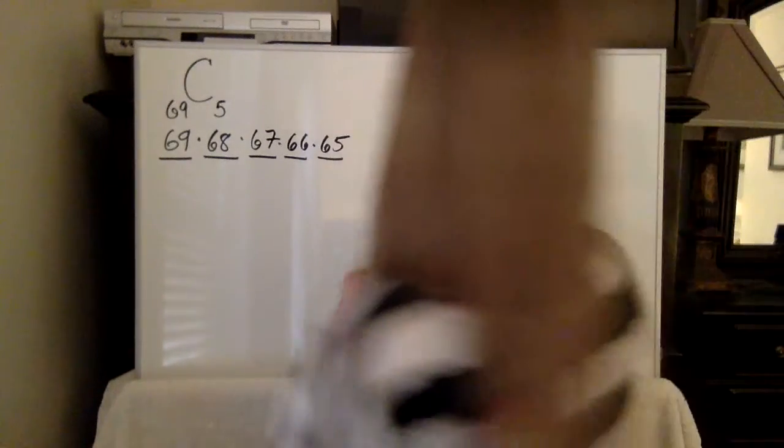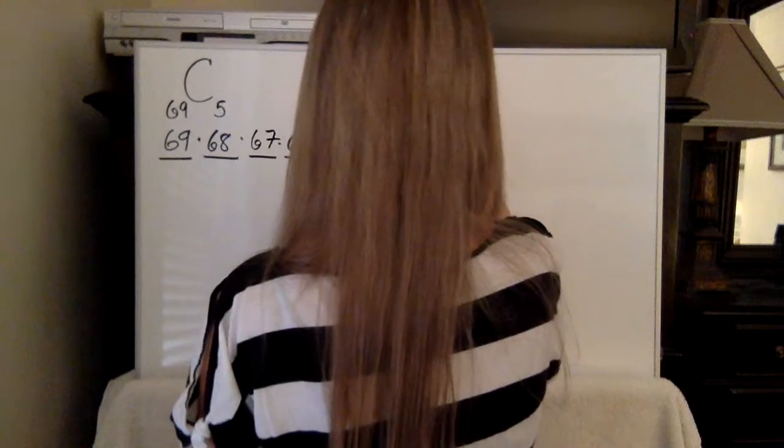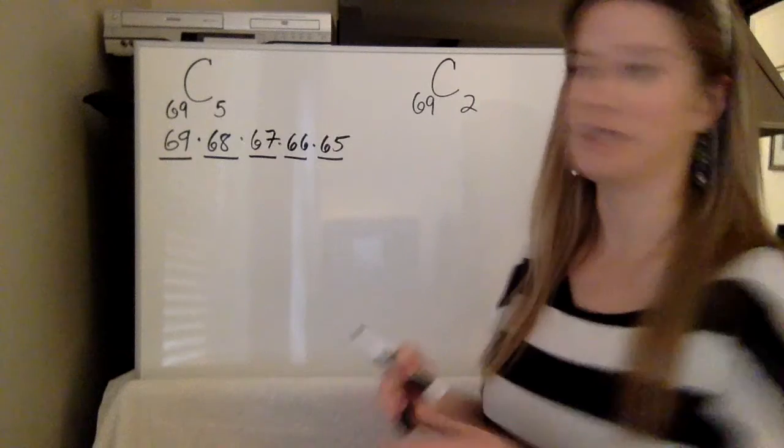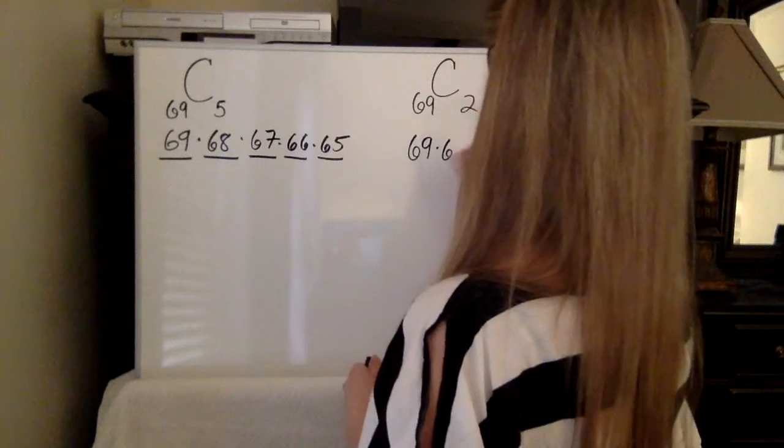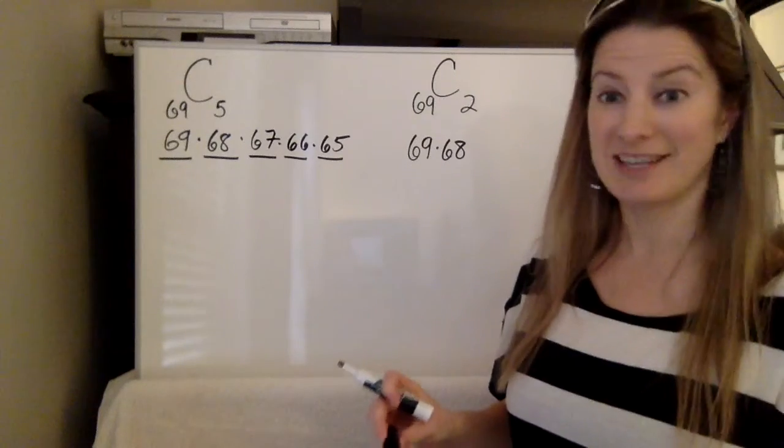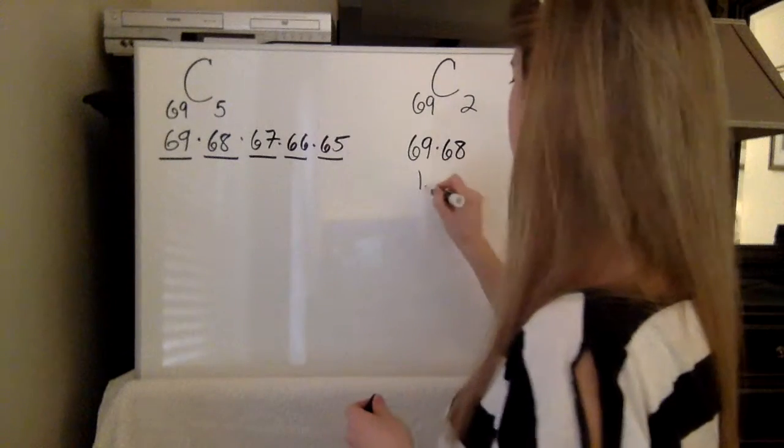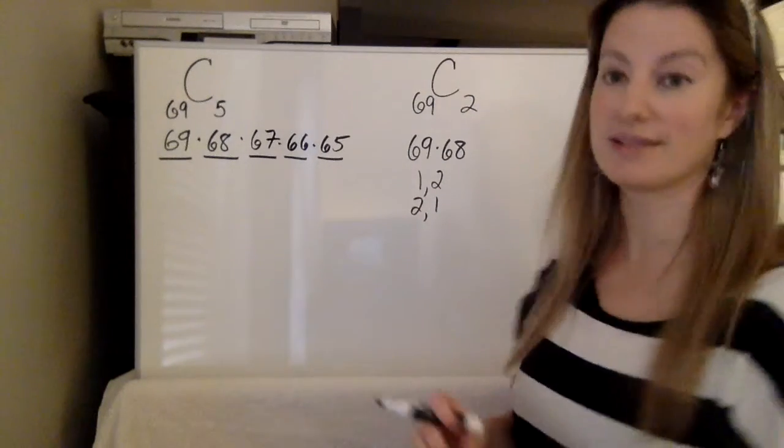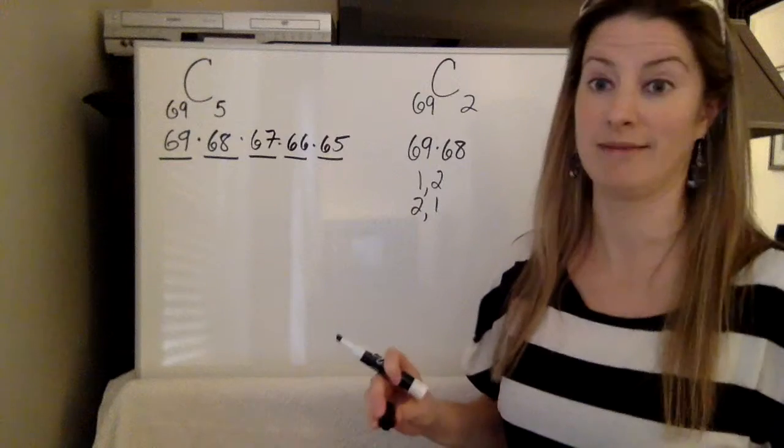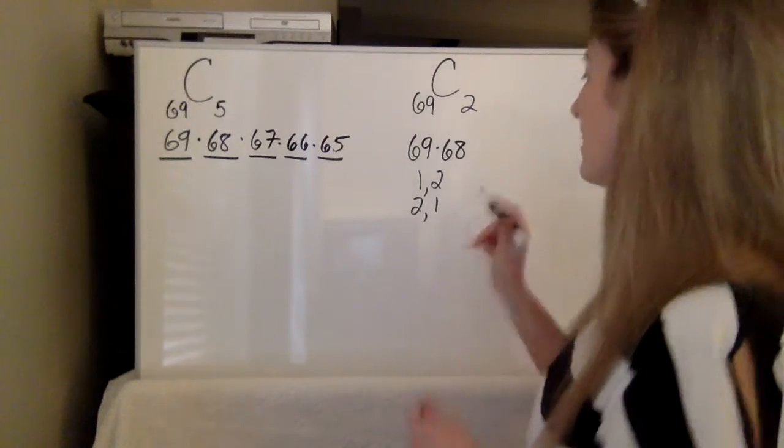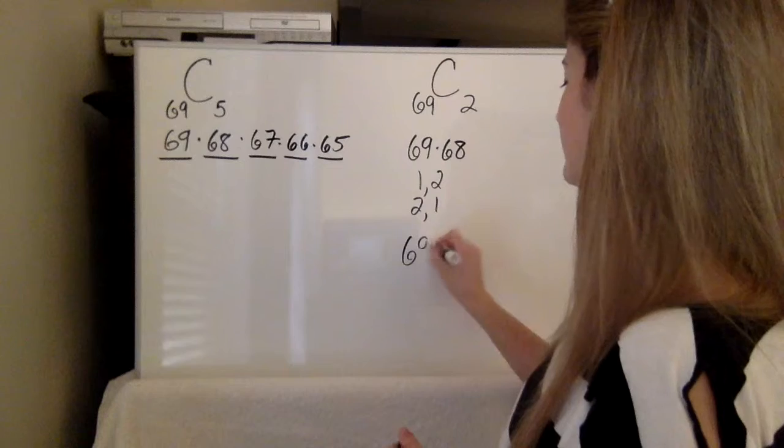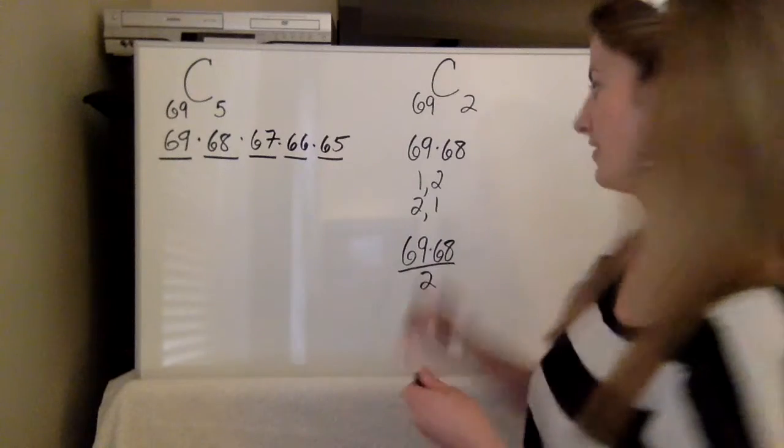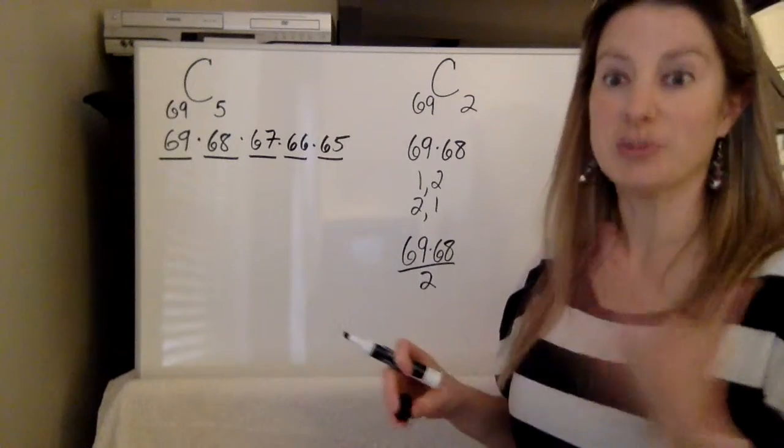Now let's start off with maybe we're only choosing 2 numbers out of 69. So let's think about this. 69 ways to choose the first number, 68 ways to choose the second number. So let's just make it easy and say it's 1 is the first, 2 is the second. Well remember the numbers could come out 2 first and then 1 second and it doesn't matter, we still win because everything goes in ascending order. So we have to say, all right, well 69 times 68 divided by 2 because we have to account for the fact that there are two ways that each pair of numbers could come out.